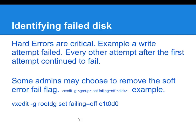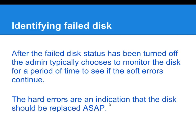Some administrators may choose to remove the soft error flag. The way to do this is to use the command VXEdit -G, then list a group, set failing off, and then list the disk device. Once you remove that flag, you could periodically monitor that disk for some time and see if you continue to get soft errors. If you do continue to get them, you may want to consider replacing that disk anyway, because it probably has a lot to do with the disk being on its last leg.